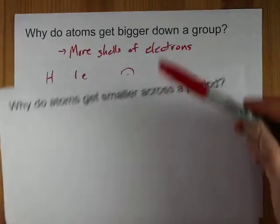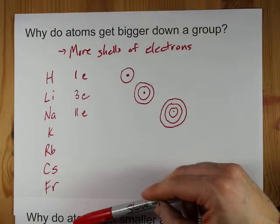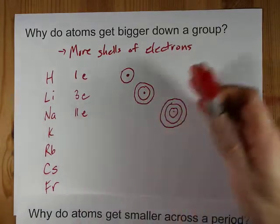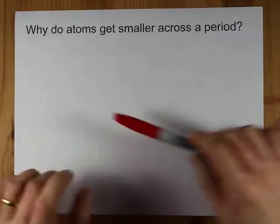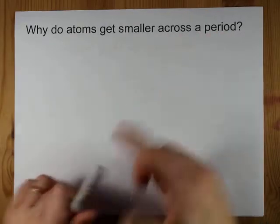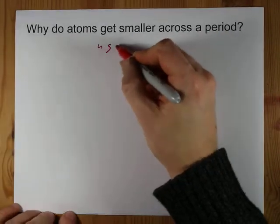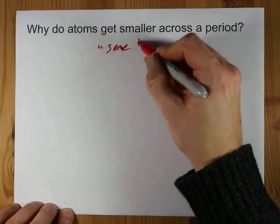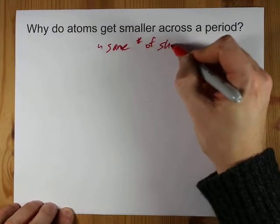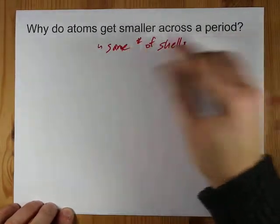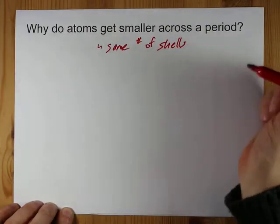You probably know that as you go down the periodic table, you're adding shells of electrons so those atoms get larger. When you go across a period, you're keeping the number of shells the same, same number of shells as all the other atoms in that row.